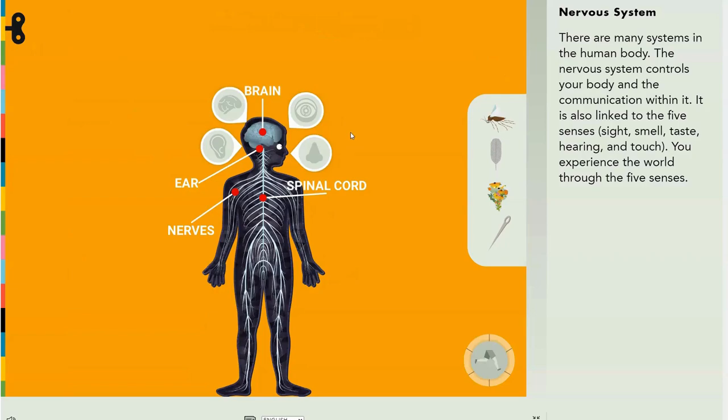The nervous system is made out of different things than everything else and controls all your actions around the body. There are so many systems in the human body. The nervous system controls your body and the communication within it. It is also linked to the five senses: sight, smell, taste, hearing and touch. You experience the world through these five senses.